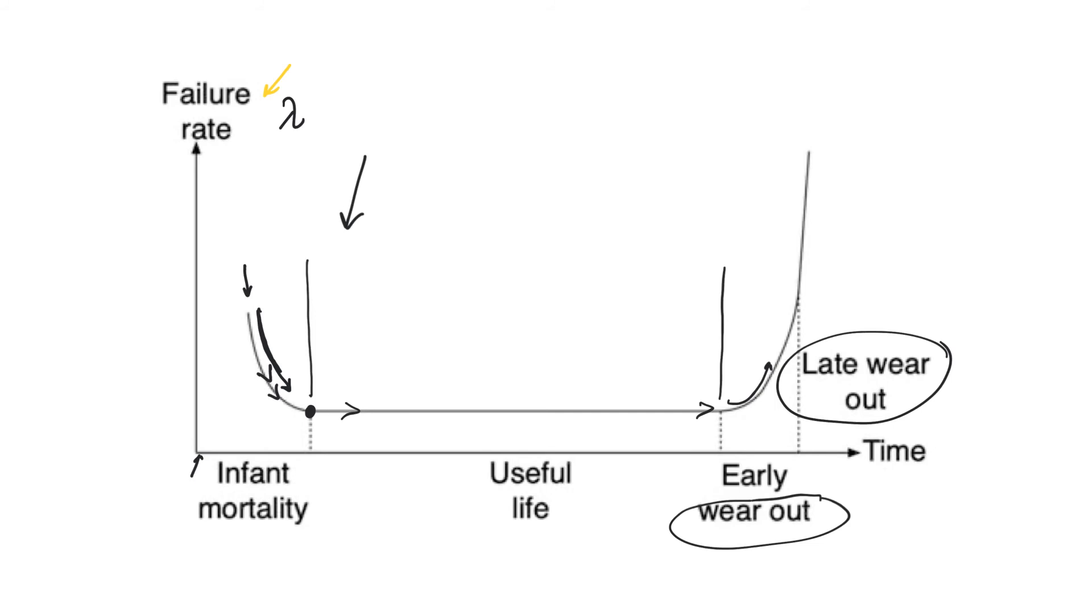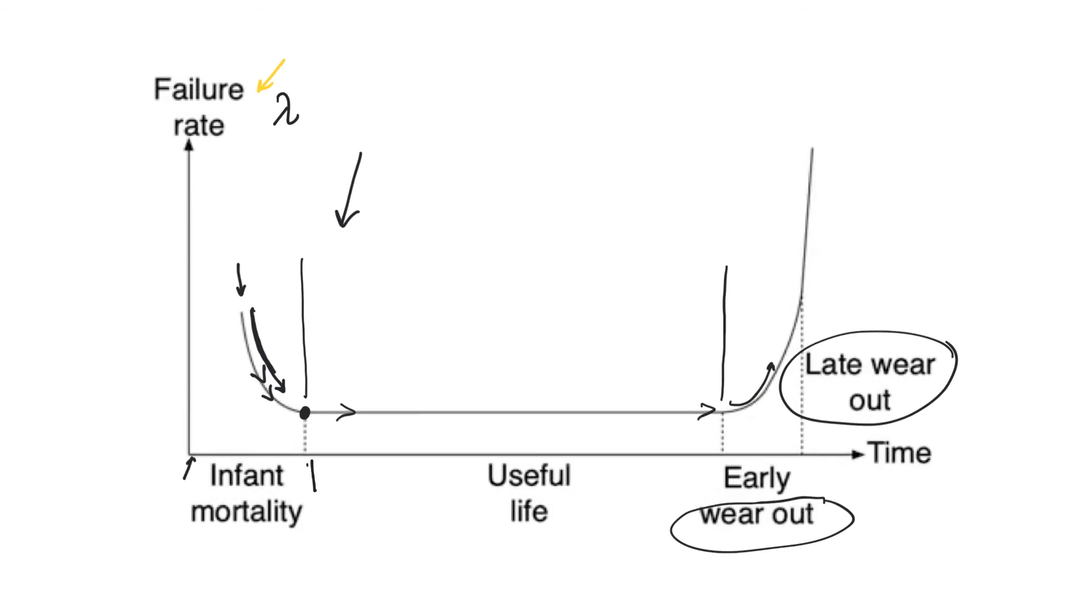What matters is that you manage these failure rates. The goals of a good product are first of all to bring the start of useful life earlier and to push the start of wear out later. So basically increase the period of time in which the product is in useful life and also to bring down this value of failure rate for useful life. We just want to increase the amount of time in which the product is in useful life and to push down the failure rate during useful life.